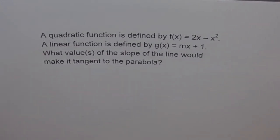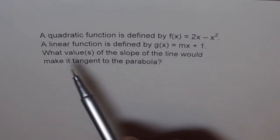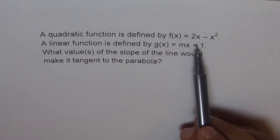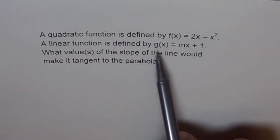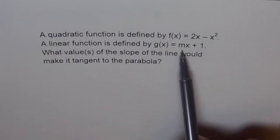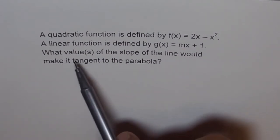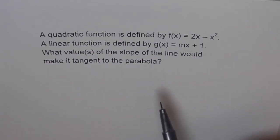Let's try to understand the interaction between a quadratic function and a line. A quadratic function is defined by f(x) = 2x - x². A linear function is defined by g(x) = mx + 1, where m is a variable. The question asks: what values of the slope of the line would make it a tangent to the parabola?